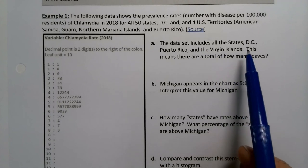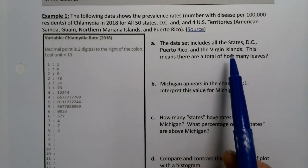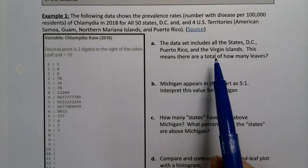The data set includes all the states, Washington DC, Puerto Rico, and the Virgin Islands. This means there are how many leaves?